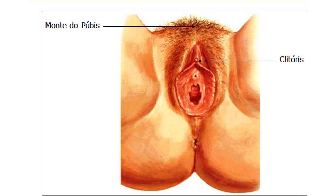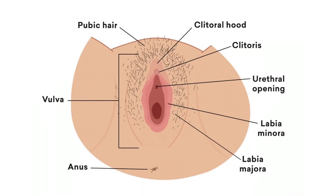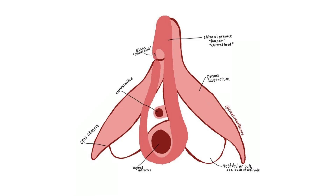The labia minora are thinner and more pigmented and extend medially to the labia majora. Although they naturally vary in shape and size from woman to woman, the labia minora serve to protect the female urethra and the entrance to the female reproductive tract. The superior anterior portion of the labia minora comes together to encircle the clitoris. The clitoris is an organ that originates from the same cells as the glans penis and has abundant nerves, making it important in sexual sensation and orgasm.